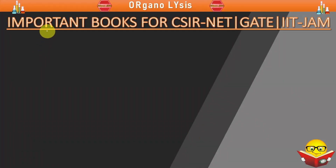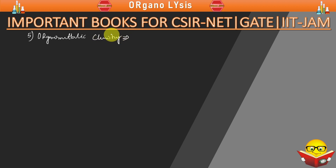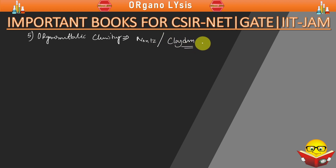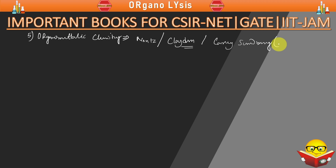For organometallic chemistry, you can refer Zweifel & Nance, Clayden, and Carey-Sundberg Part V. Clayden is a very good book for organometallic chemistry where basic to advanced problems are explained in detail. You can also refer Carey-Sundberg Part V.